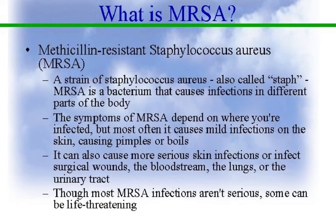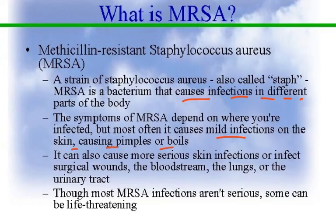MRSA stands for methicillin-resistant Staphylococcus aureus — a strain of Staphylococcus aureus, a bacterium also called staph, that causes infections in different parts of the body. The symptoms of MRSA depend on where you are infected, but most often it causes mild infections on the skin such as pimples or boils. It can also cause more serious skin infections or infect surgical wounds, the bloodstream, the lungs, or the urinary tract. Though most MRSA infections aren't serious, some can be life-threatening.